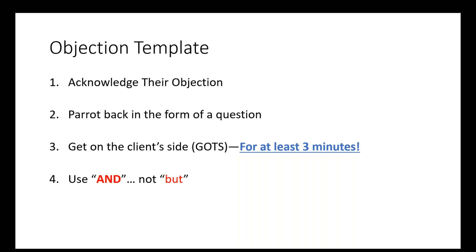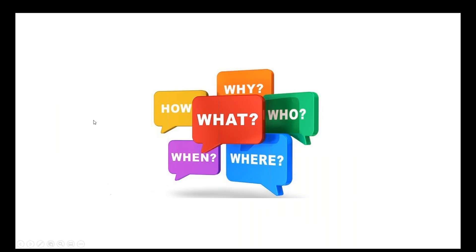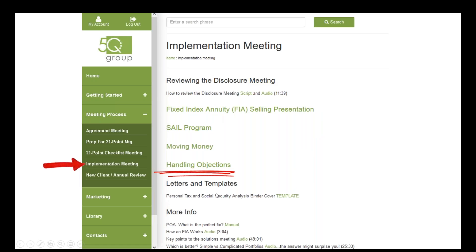Again, you don't need to worry about this. Do it the way you've always done it as long as you do these three things first, and you'll be fine. But a lot of people wanted to know how to turn that corner. So let's talk about that. You ask who, what, where, why, when, and how questions. If you want to know how to do that, go to the website, go to implementation, handling objections, or just type in 'handling objections.'